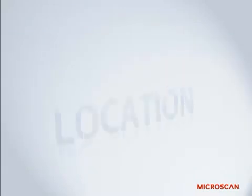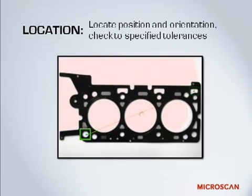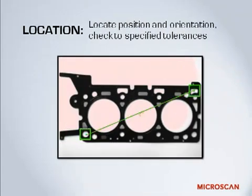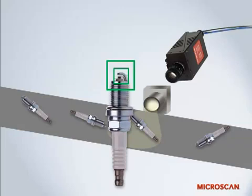Location is when machine vision is used to report the position and orientation of a part. We can locate the position and orientation and check that to a specified tolerance — looking at the part to make sure it's at the correct angle, and using that as a reference point to verify proper assembly. You can also use this for alignment to other machine vision tools. Your parts may be facing all different directions as they go down the production line, and you can locate a part, straighten the image, and then run other machine vision processing tools on it.